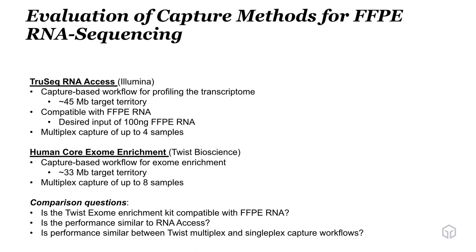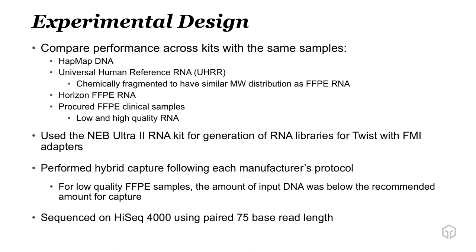Here's our experimental design. We tested a variety of different samples. We began with HapMap DNA as well as a universal human reference RNA — UHRR — which is a mix of 10 different cell line RNAs. We chemically fragmented this RNA so that it has a similar molecular weight distribution as some poor quality FFPE samples. We also extracted RNA from Horizon Discovery's FFPE control, and we also used procured FFPE samples with both low and high quality — things with RINs of 5 or 6 and things with RINs of 1 or 2.